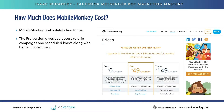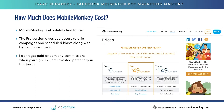The pro version is where we get into things like drip campaigns, scheduled blasts, and features like that. A lot of you will want that functionality, and some of you will not. The pro plan also gives you higher contact tiers. The pro plan is $49 a month.